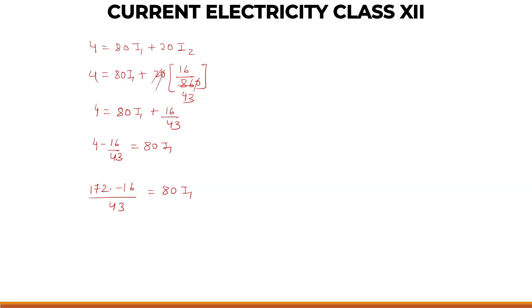So 172 minus 16 is 156 upon 43 equals 80 I1. And 156 whole divided by 43 into 80, that is equal to I1.